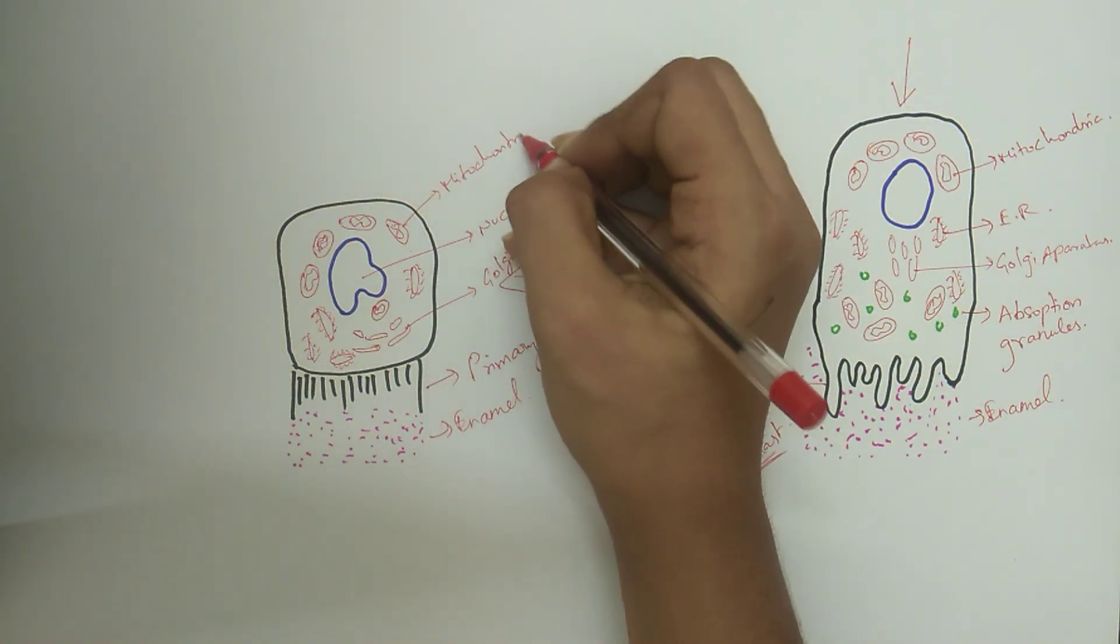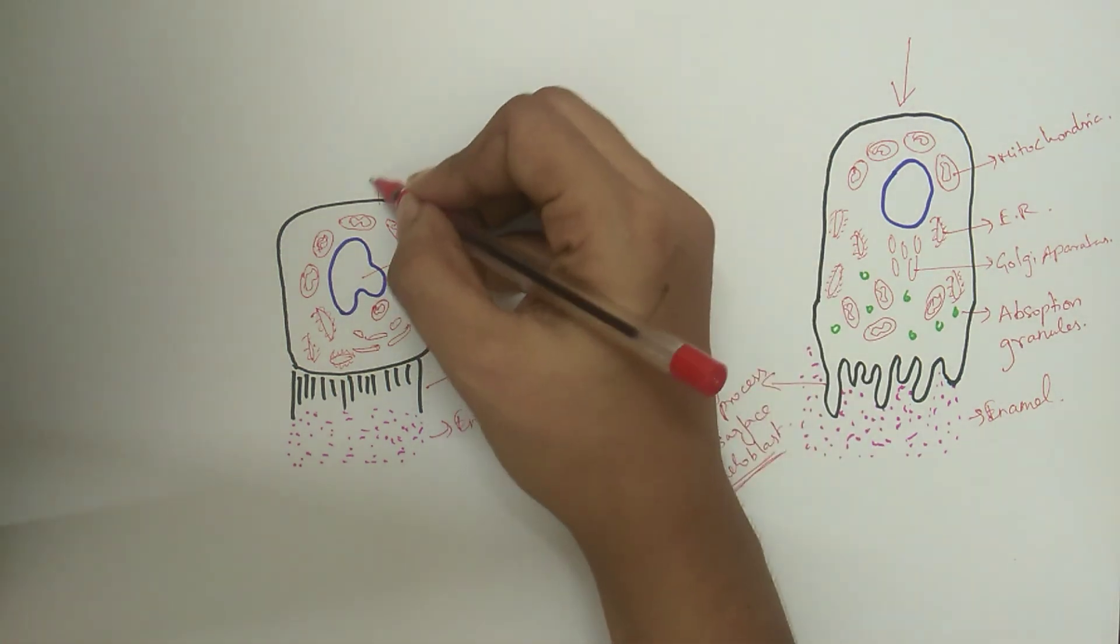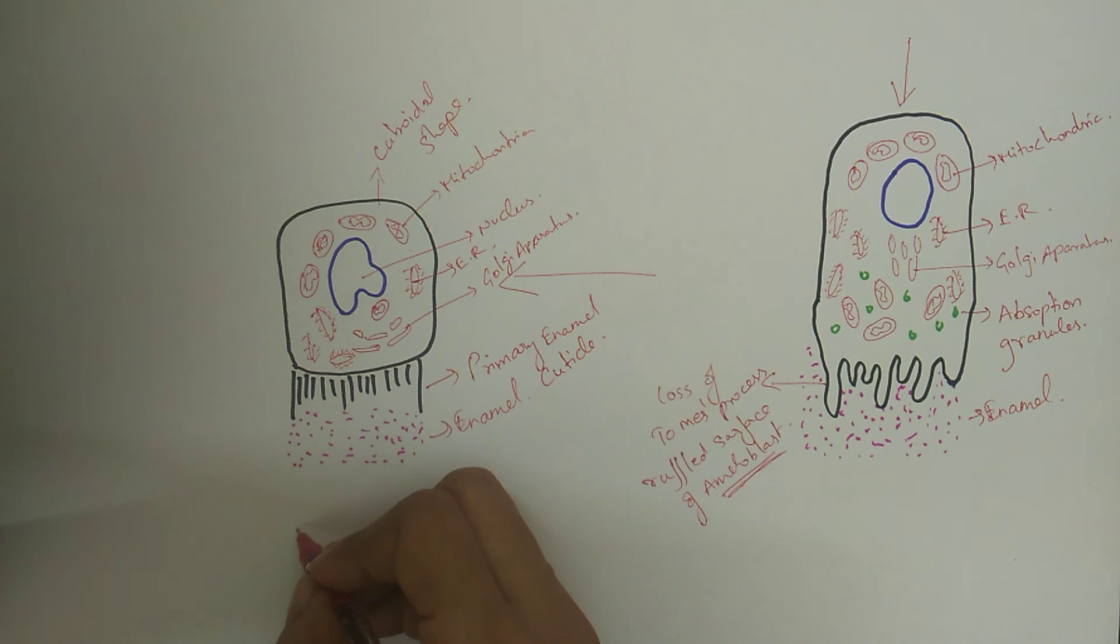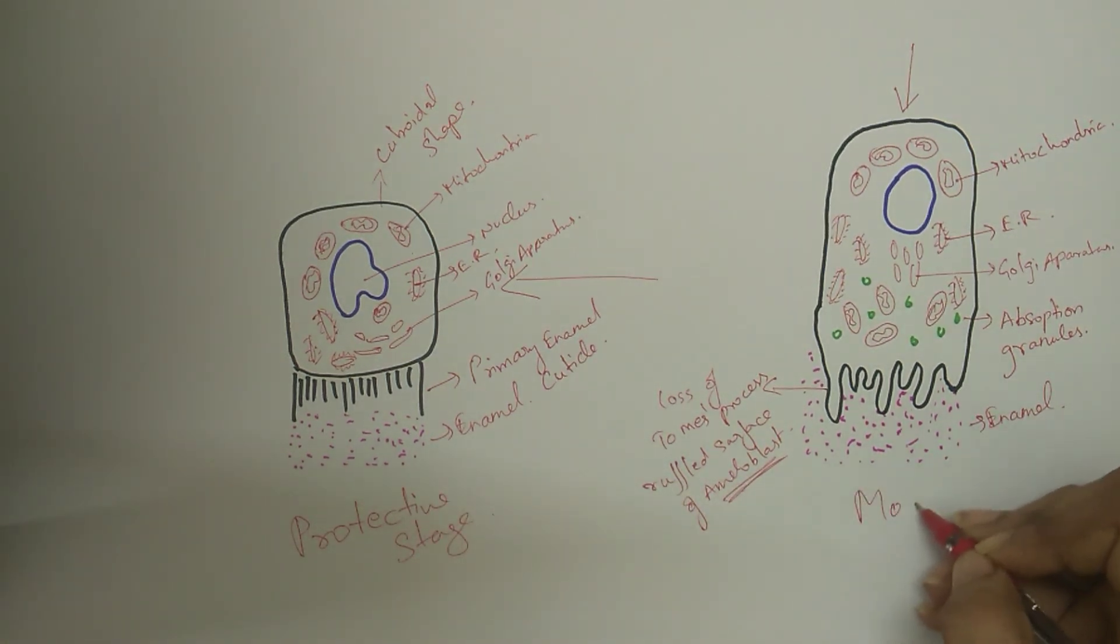Just before eruption, when the enamel organ retracts from the cervical portion of the crown, the adjacent connective tissue cells come in contact with the enamel and deposit a fibrillar cementum.